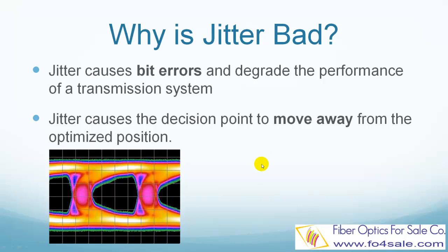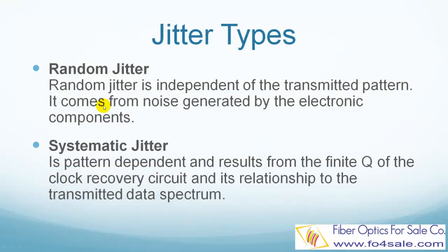Jitters can be roughly categorized into two types: random jitter and systematic jitter. Random jitter comes from the noise generated by the electronic components in telecom equipment, and is independent of the transmitted data pattern. Systematic jitter is dependent on the transmitted data pattern, and is caused by the finite queue of the clock recovery circuit and its relationship to the transmitted data spectrum.